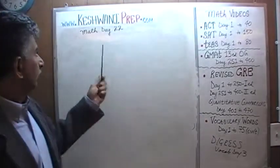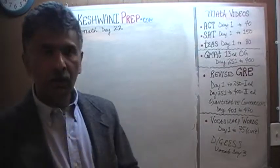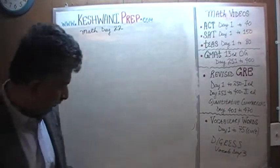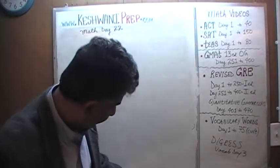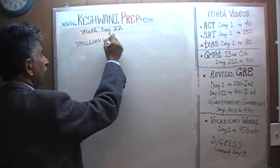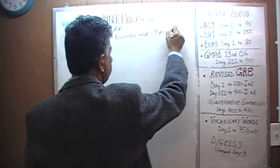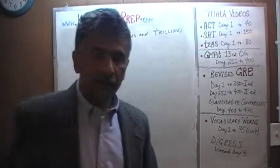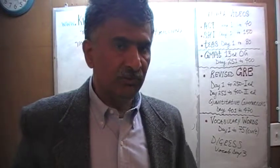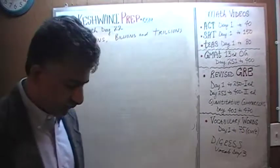Hello, my name is Kishwani — that's K-E-S-H-W-A-N-I. We are here because we want to improve our math skills. Today is lesson number 22. We'll talk about big numbers — huge numbers: millions, billions, and trillions. A lot of times I come across students who have a little bit of difficulty grasping these concepts — what is a billion, what exactly is a million, how many millions make a billion, how many billions make a trillion. That's what we're going to talk about.